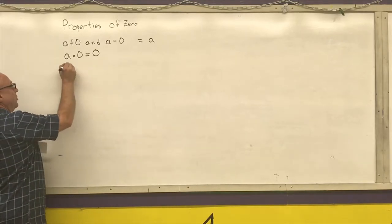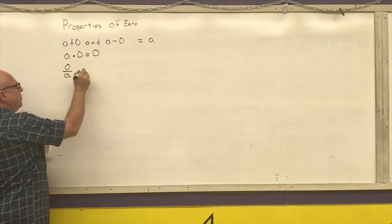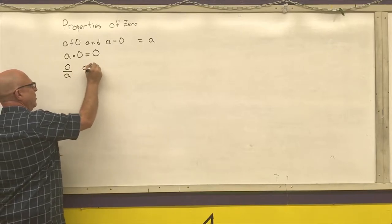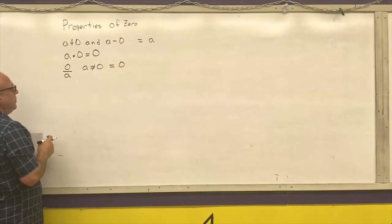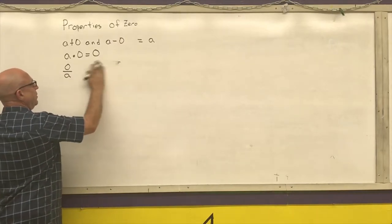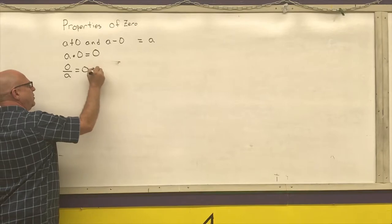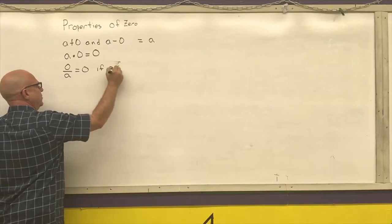0 over A, with A not equaling 0, is equal to 0. I'm going to write it equals 0, if A is not equal to 0.